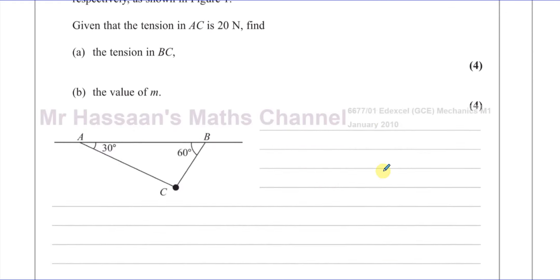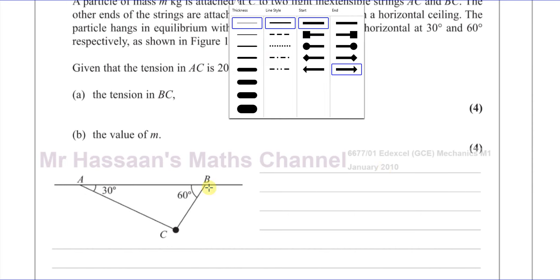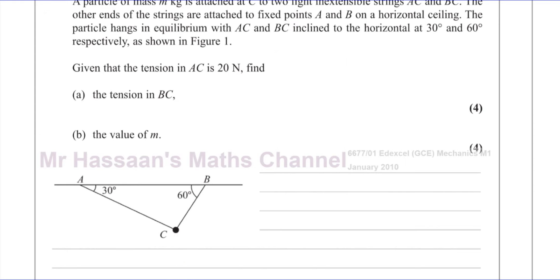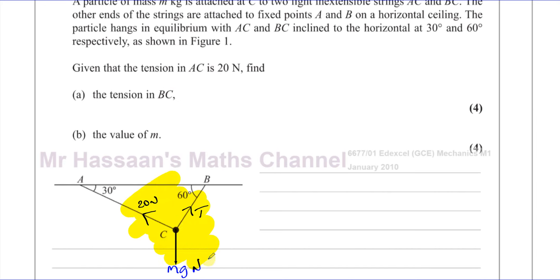So we have this information which I'm going to put onto the diagram. We have a mass m — we don't know its value, that's one of the things we need to find. The weight of this mass is mg newtons. The tension in AC is 20 newtons. The forces acting on the particle are: its weight mg downward, 20 newtons pulling one way along AC, and the tension T in BC pulling the other way, keeping it in equilibrium.